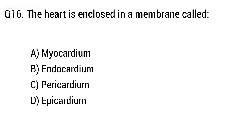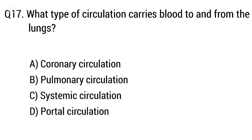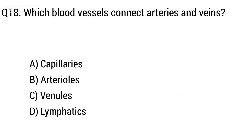Question 16: The heart is enclosed in a membrane called option A: myocardium, B: endocardium, C: pericardium, D: epicardium. The right answer is option C, pericardium. Question 17: What type of circulation carries blood to and from the lungs? Option A: coronary circulation, B: pulmonary circulation, C: systemic circulation. The right answer is option B, pulmonary circulation.